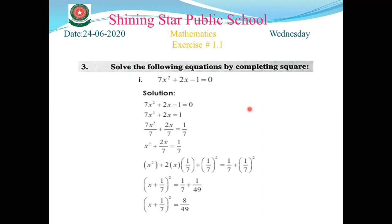We have to solve this question with the help of completing the square. First, in the solution, we rewrite the question: 7x² + 2x - 1 = 0. Then we take the constant to the right-hand side, so minus 1 changes to plus 1.